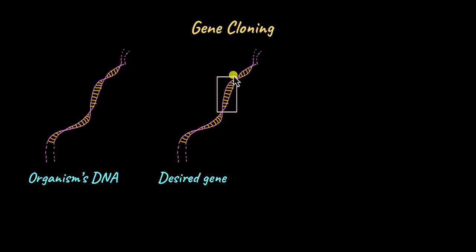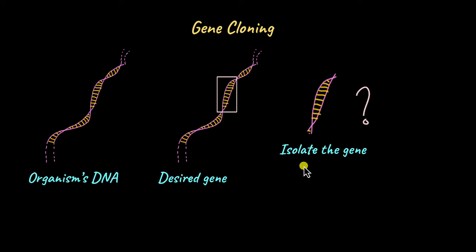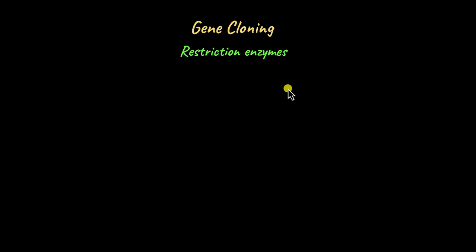We want to make copies of this specific gene alone. It makes sense to isolate this gene from the rest of the genome and make copies of it alone, right? Otherwise, we'd just be making copies of the entire genome, which is not very efficient. So what is a way to isolate this gene?